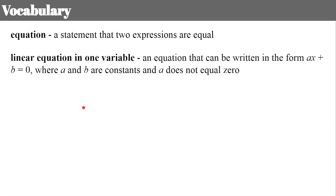A linear equation in one variable means that you have an equation with an equal sign and there is only one variable. It can be any of the 26 letters of the alphabet — typically we see x, but there are other variables in math. You can't have more than one, so you can't have an x and a y. You cannot solve one equation if it has multiple variables. The reason it says a cannot equal zero is because any value times zero is zero, so if a were zero, it would eliminate the x term.